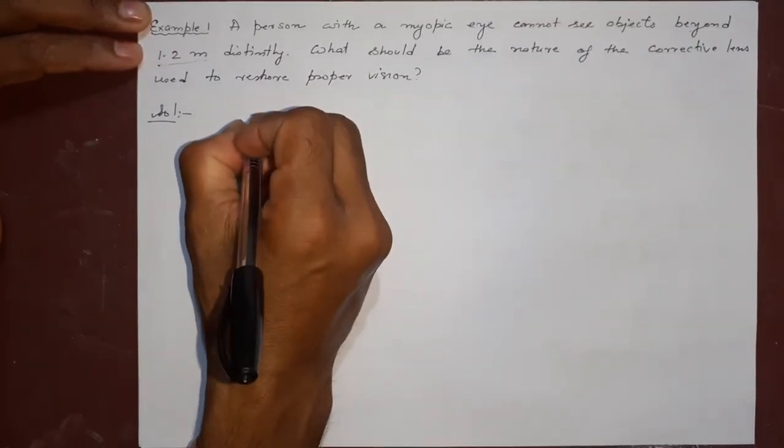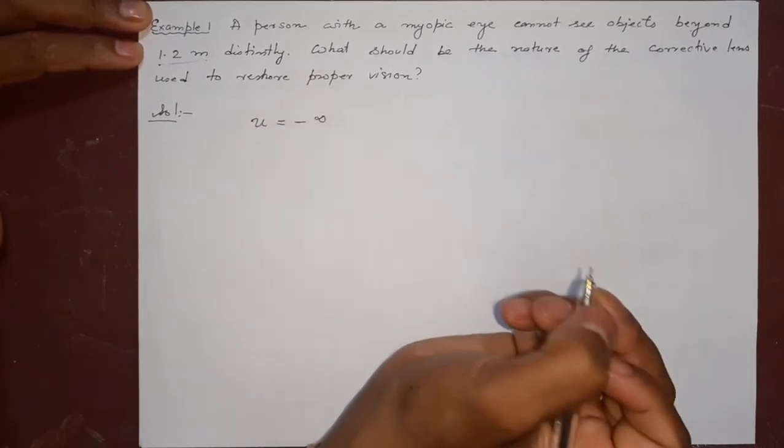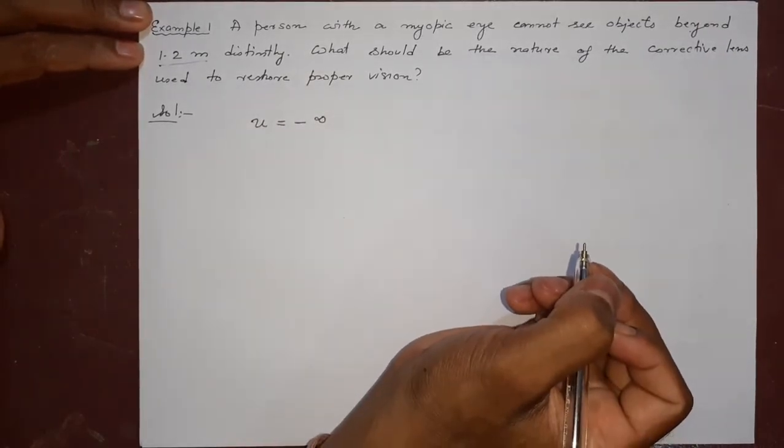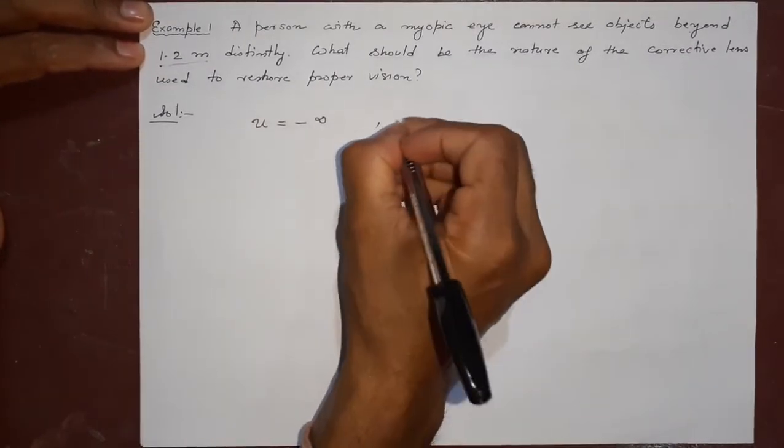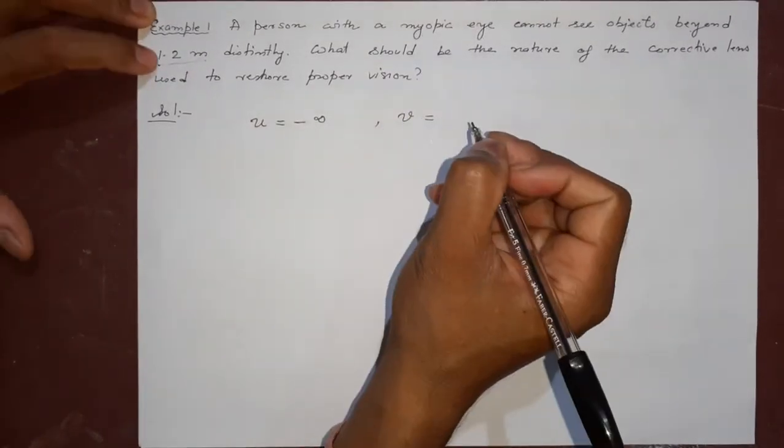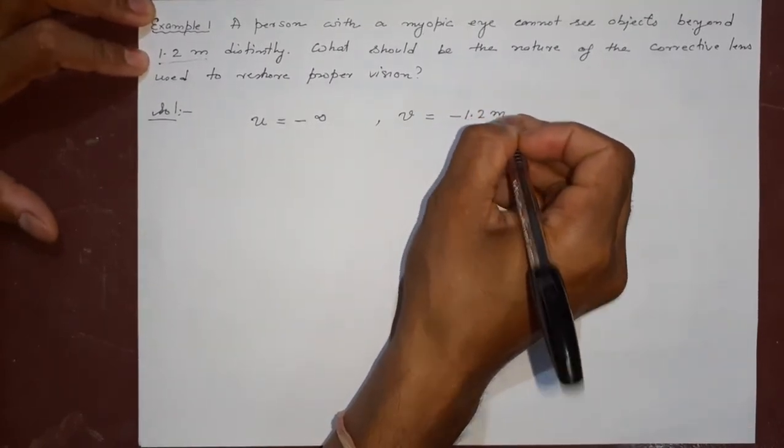What you will do is: the object is at his problem, at far distance, so minus infinity. For myopic, the object will always be like this. And the image is at minus 1.2 meters. Beyond this he cannot see.